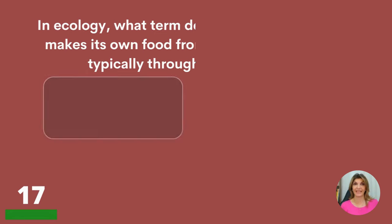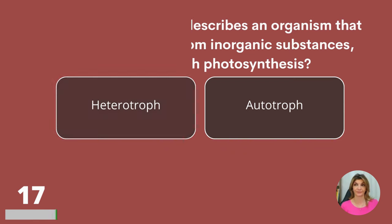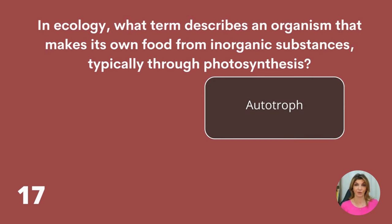In ecology, what term describes an organism that makes its own food from inorganic substances, typically through photosynthesis? Heterotroph or autotroph? Autotroph.